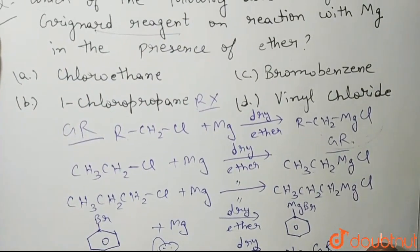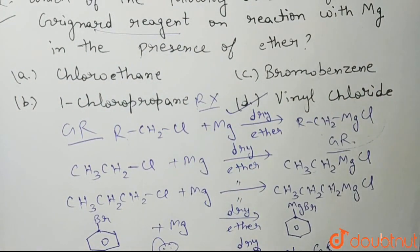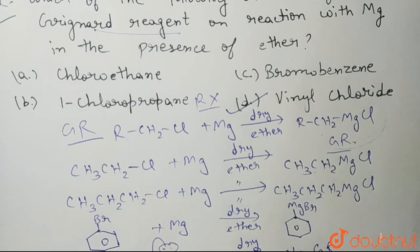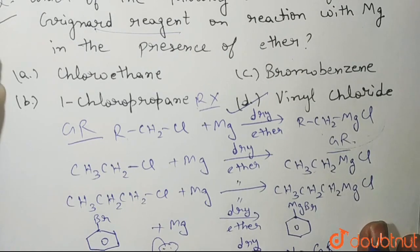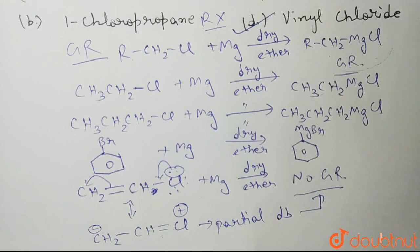So that's why the correct answer will be vinyl chloride, because that is not able to form the Grignard reagent. I hope you understood this. Thank you so much.